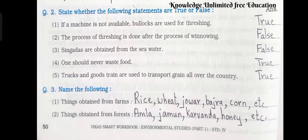Number 3: Singaras are obtained from the sea water. Answer: false. Number 4: One should never waste food. Answer: true. Number 5: Trucks and goods trains are used to transport grain all over the country. Answer: true.